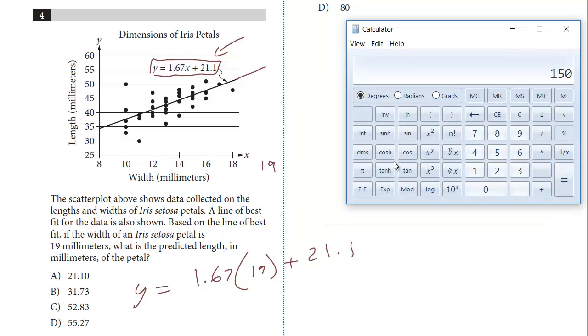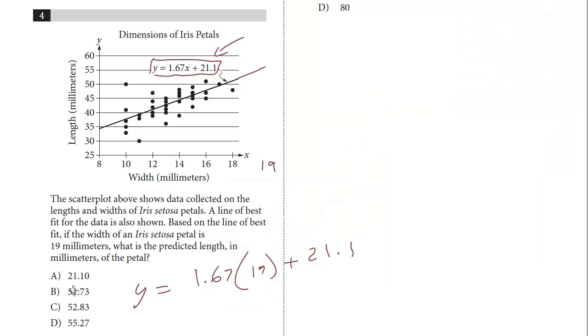Again, just use your calculator. So 1.67 times 19, plus 21.1. And 52.8, that's exactly correct.